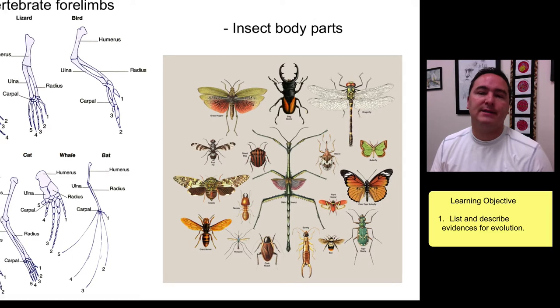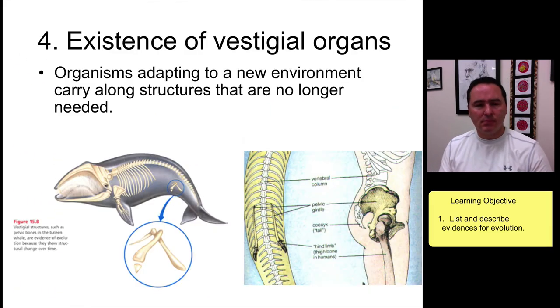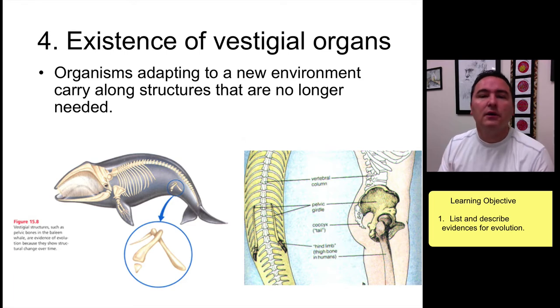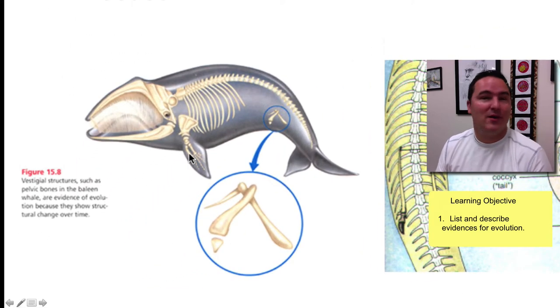Number four: vestigial organs. It turns out that in many organisms there are structures or organs that look like they're left over, like they don't belong. Why is that there? Well, it's there because it's leftover evolutionary baggage. It's basically something that is evolving away but is not all the way gone yet.